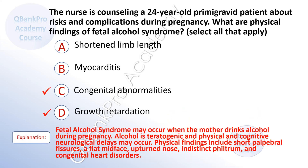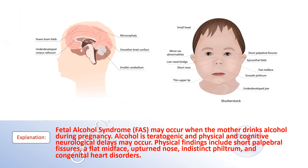The correct answer is C, congenital abnormalities, and D, growth retardation. Fetal alcohol syndrome may occur when the mother drinks alcohol during pregnancy. Alcohol is teratogenic, and physical and cognitive neurological delays may occur. Physical findings include short palpebral fissures, a flat mid-face, upturned nose, indistinct philtrum, and congenital heart disorders.